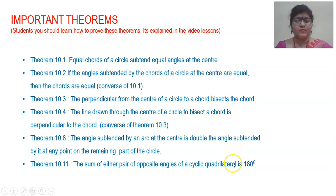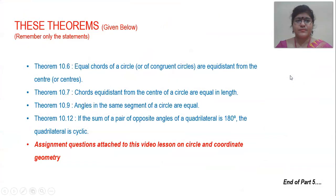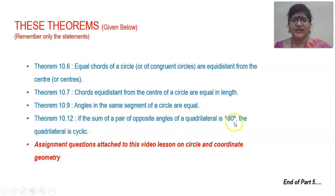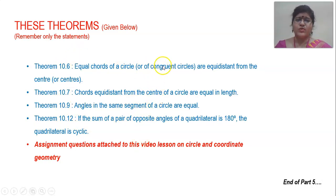I hope you have jotted this down, as this is how it is mentioned in the textbook — Theorem 10.1, 10.2, 10.3. The theorems listed below require you to remember only the statements: angles in the same segment of a circle are equal — which you use when solving questions from exercise 10.5 — and the sum of opposite angles of a cyclic quadrilateral is supplementary. Remember these theorems by statement only.